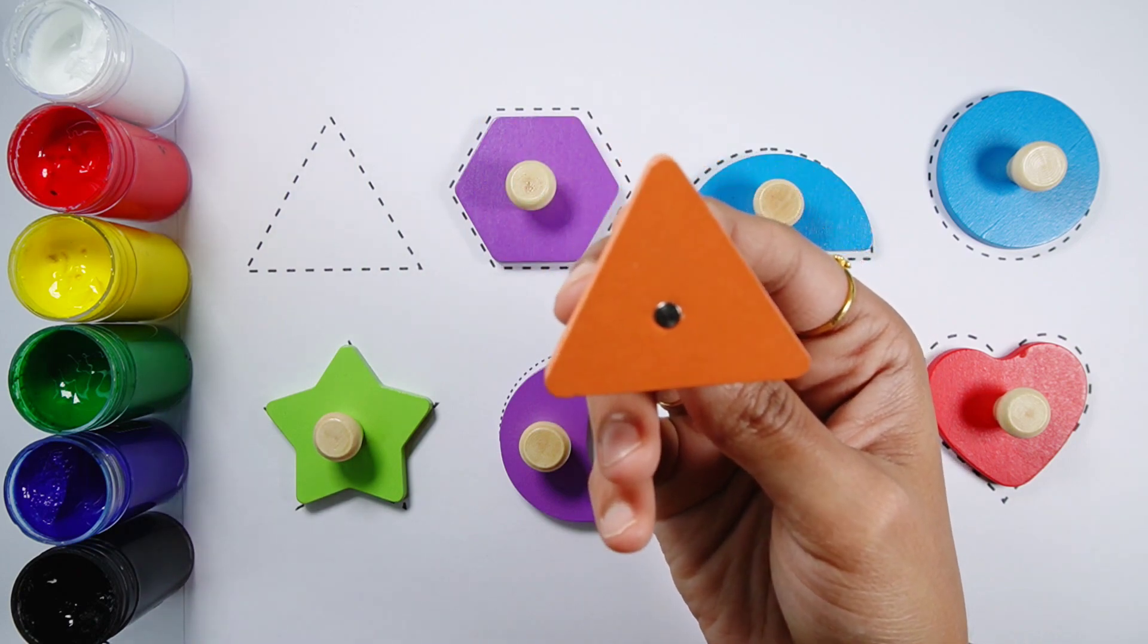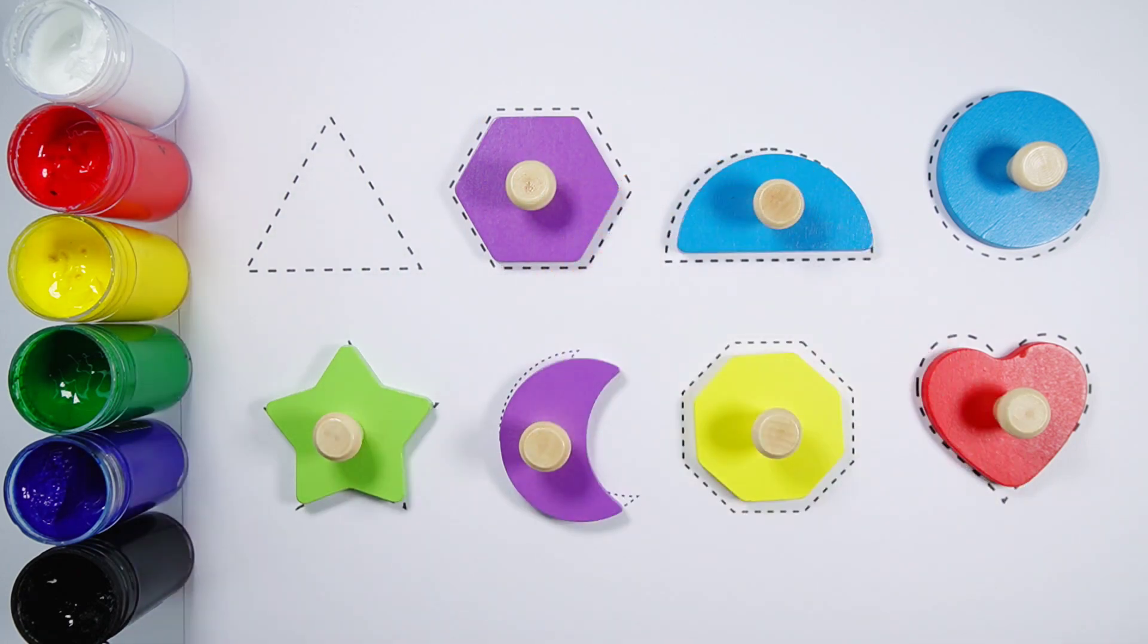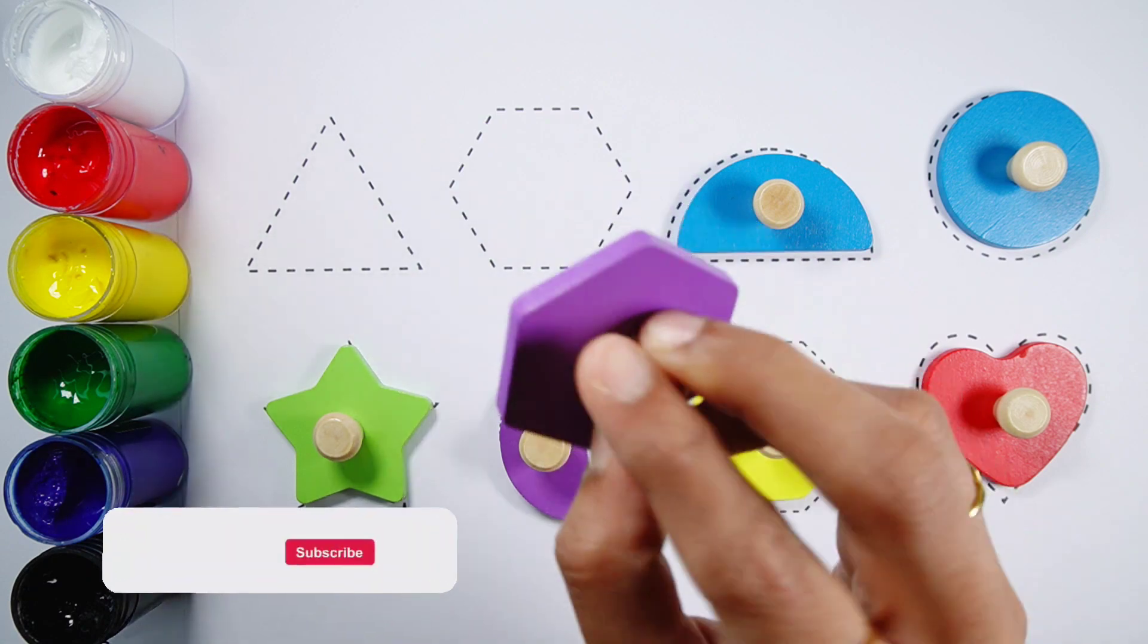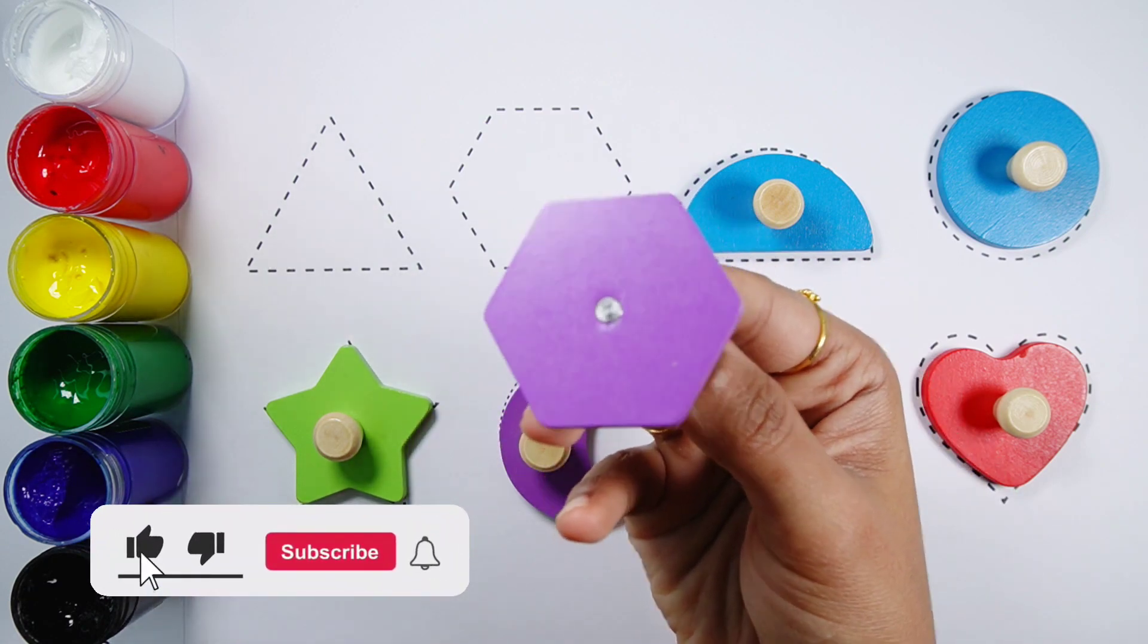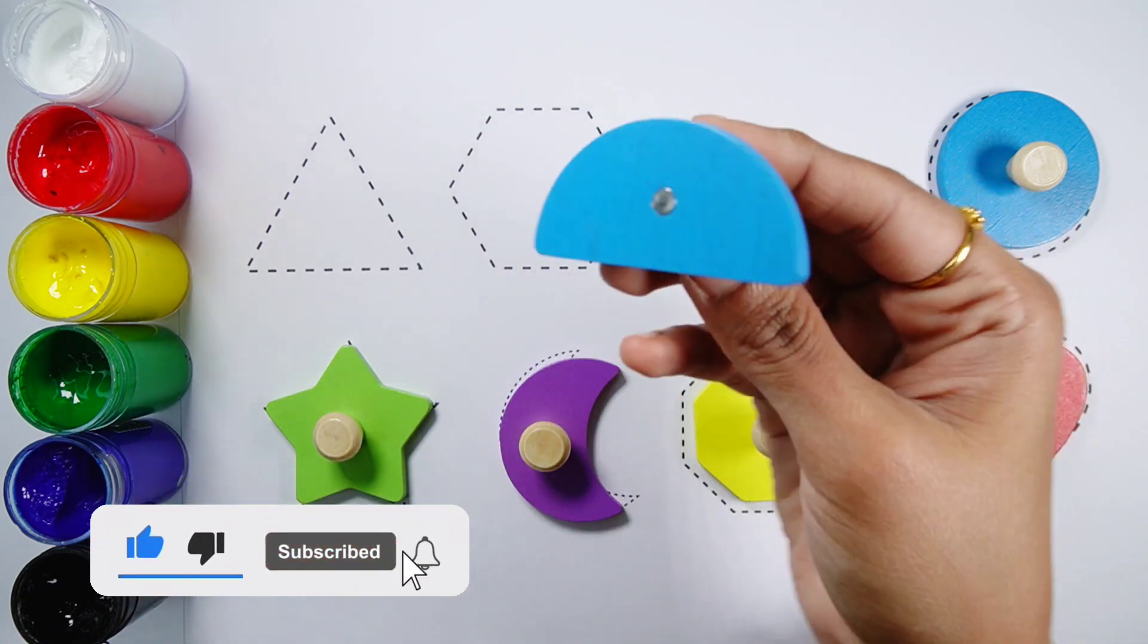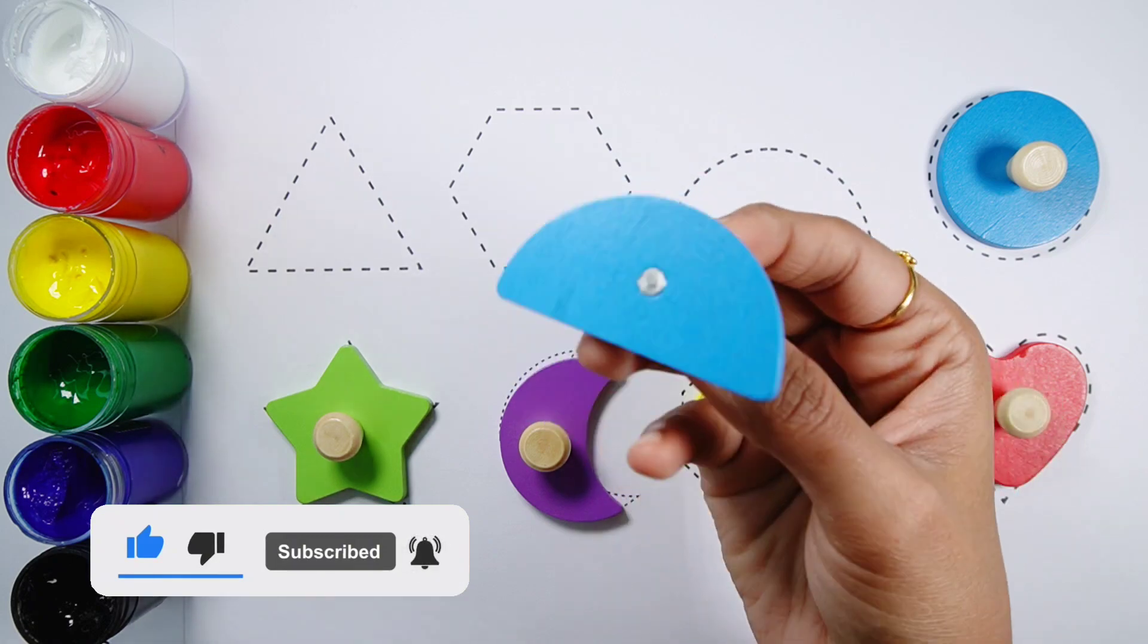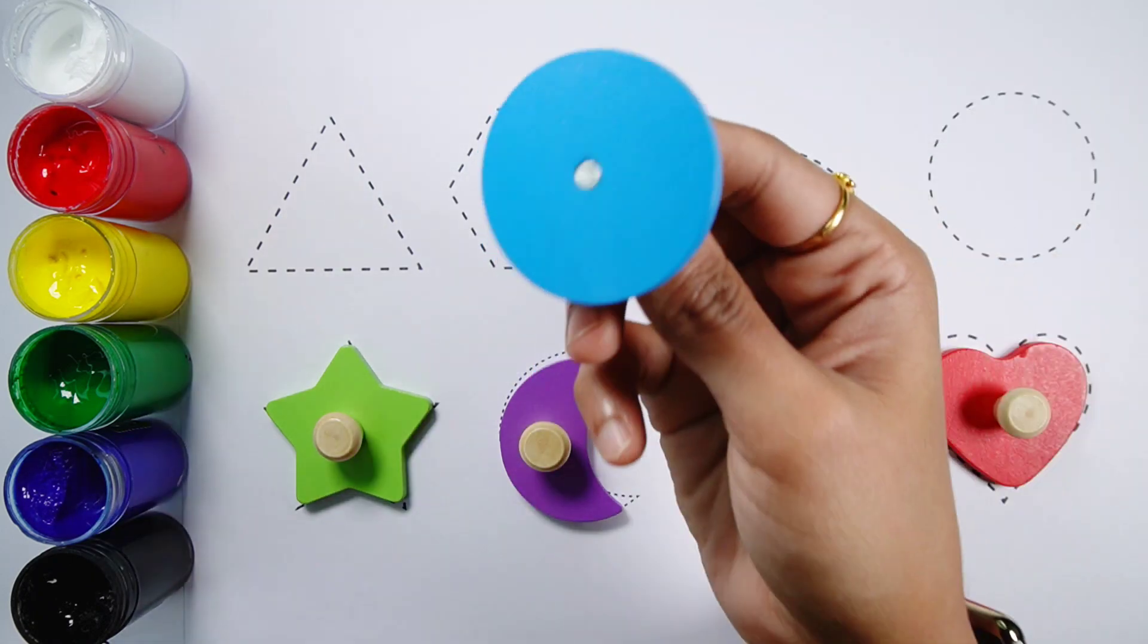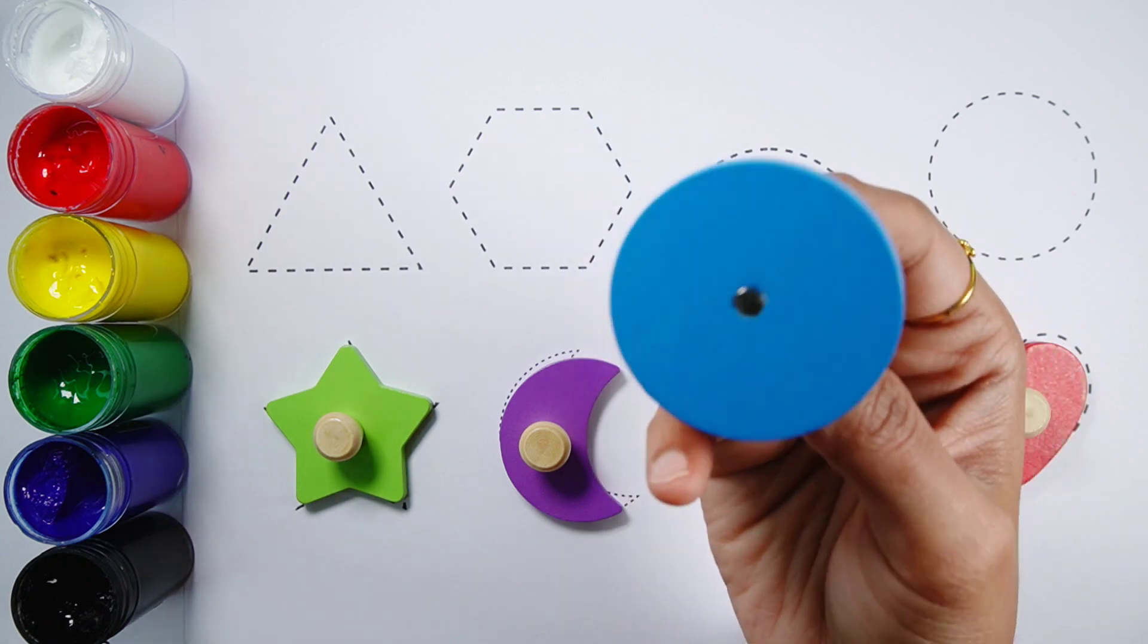Triangle, an orange triangle. Hexagon, a purple hexagon. Semicircle, a blue semicircle. Circle, a blue circle.